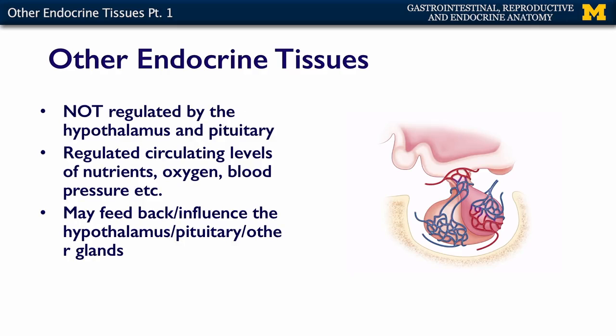These other endocrine tissues that are not regulated by the hypothalamus and pituitary are going to be regulated by other kinds of stimuli, like circulating levels of nutrients and circulating levels of oxygen.